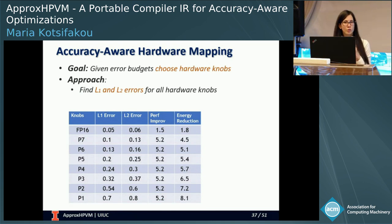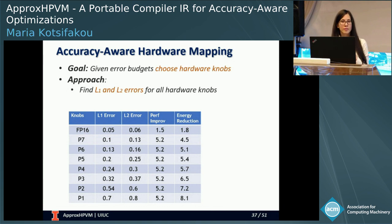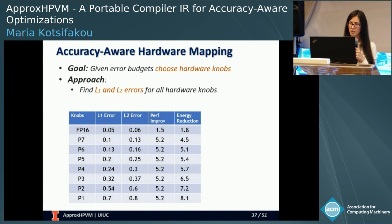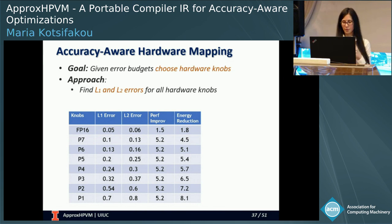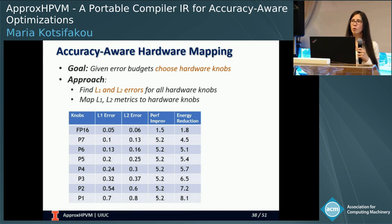The hardware mapping phase works by choosing hardware knobs for all tensor operations, given the error budgets computed in the accuracy tuning phase. The first step is to compute how much error all hardware knobs introduce and how much performance and energy gain they can achieve. We do that by profiling on the hardware. After profiling, for every knob — in our case FP16 and the different levels of swing voltage on PROMIS — we compute the error introduced, performance improvement, and energy reduction.